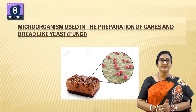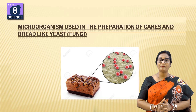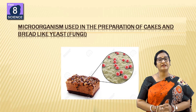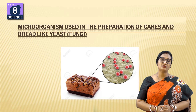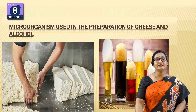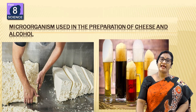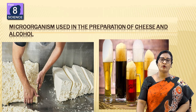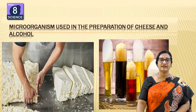Carbon dioxide is produced, and after heating, the dough becomes fluffy and sponge-like. These microorganisms are also used in making cheese and alcohol through the same fermentation process. Large slices of cheese and various industrial alcohols are produced this way.